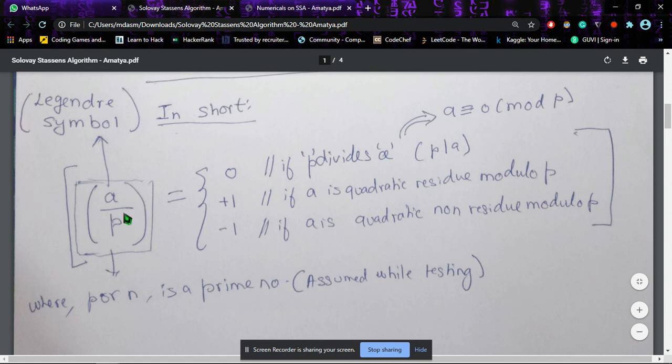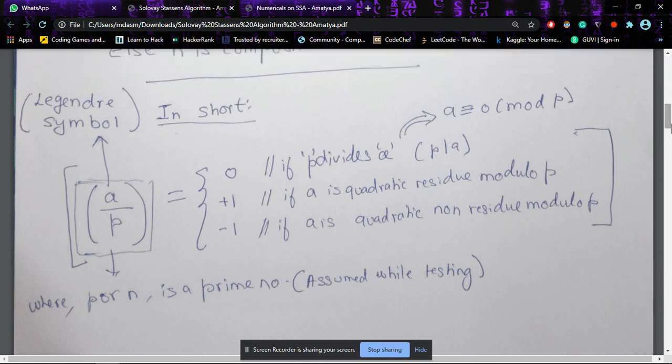Just making a slight change: if p was not a prime number—if it would have been a composite number—we would have called this a/p fraction as the Jacobi symbol. So what exactly is the Jacobi symbol?